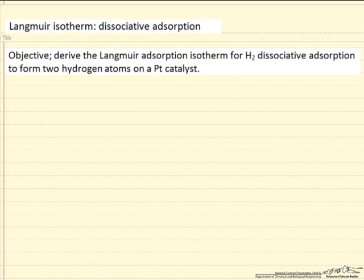We're going to look at what the Langmuir isotherm would look like if we have dissociative adsorption of hydrogen, namely a hydrogen molecule approaches the surface, interacts, and dissociates into two hydrogen atoms that are adsorbed on the surface.